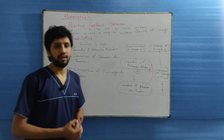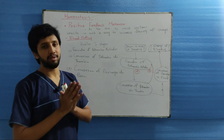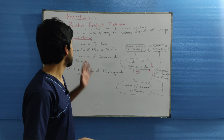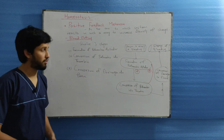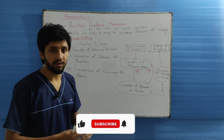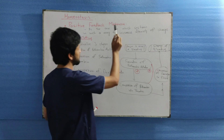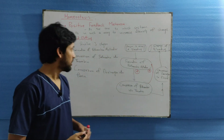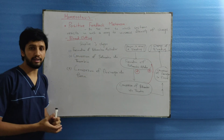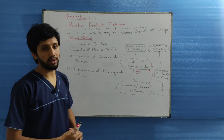Here we are with the positive feedback mechanism involved in homeostasis. We have already done the negative feedback mechanism with examples of the TSH and ADH system. Now we are dealing with the positive feedback mechanism. It is the one in which the system responds in such a way to enhance or increase the change — whenever the change occurs, the system will enhance or further double it. We will take the example of blood clotting, parturition, and milk ejection, which are all due to the positive feedback mechanism.